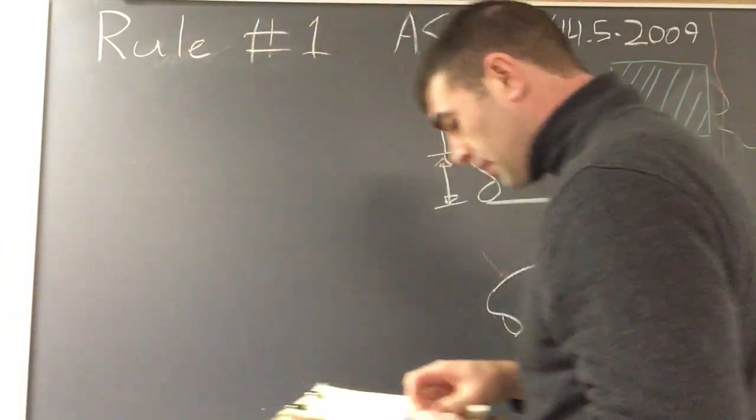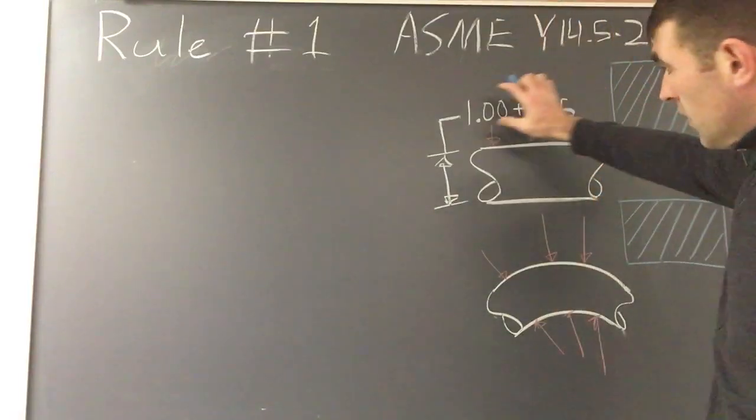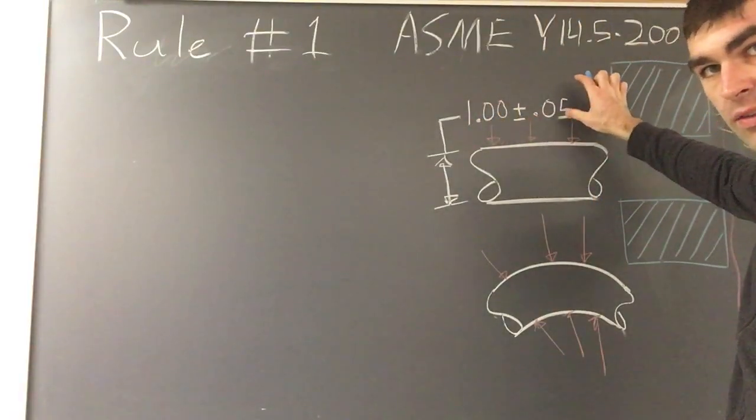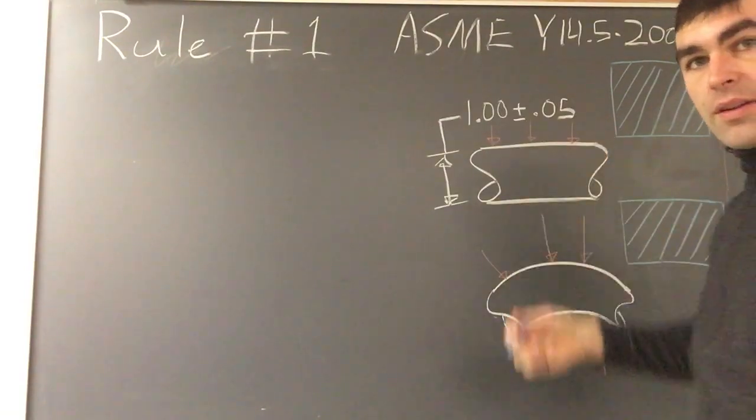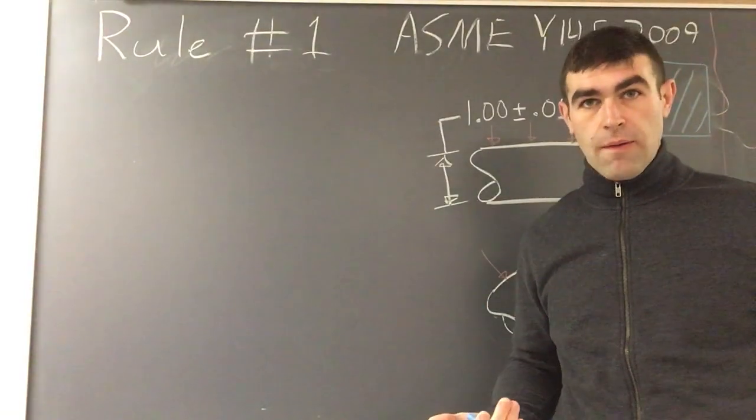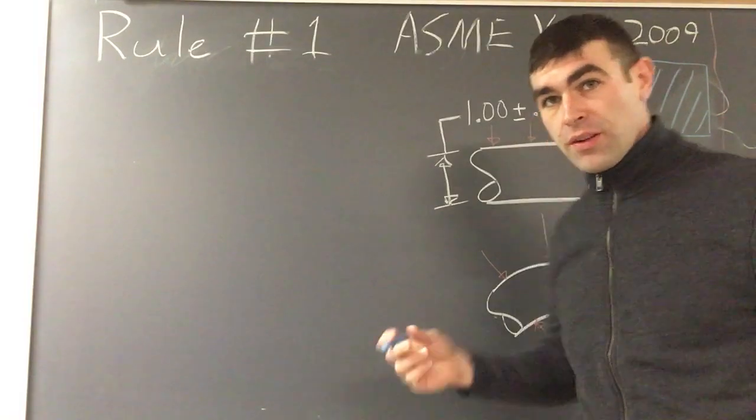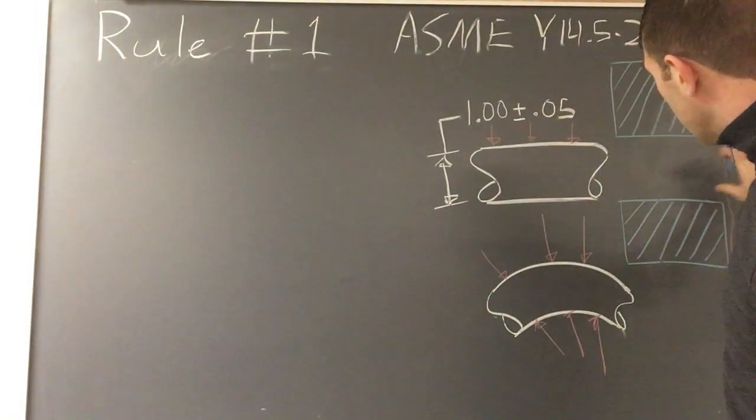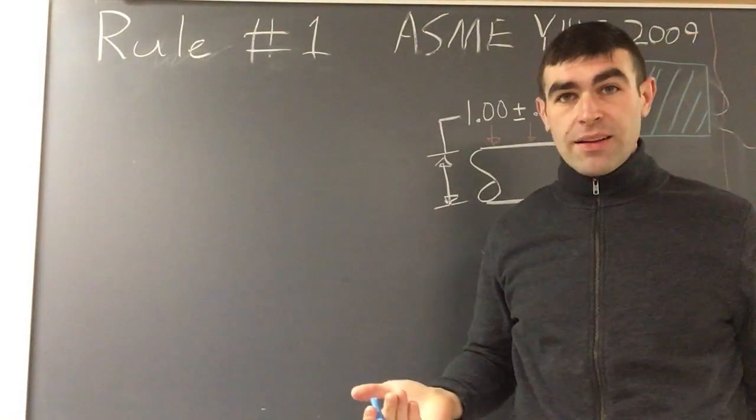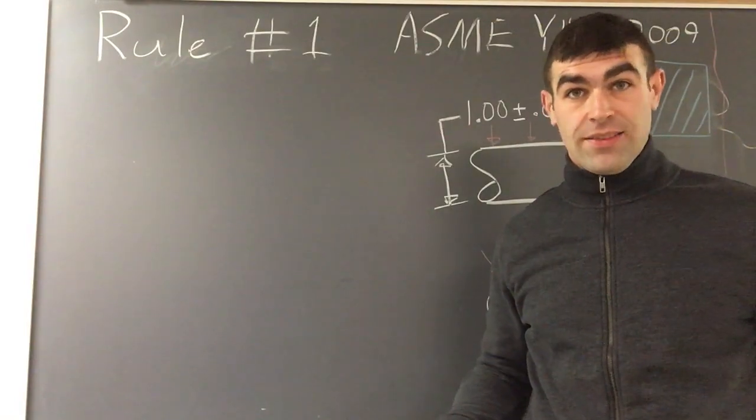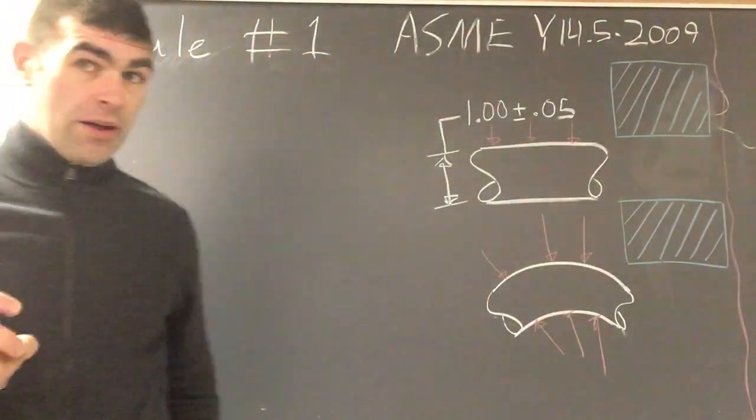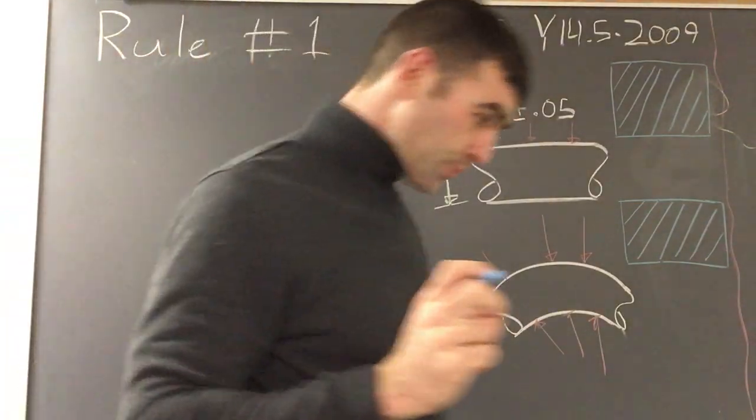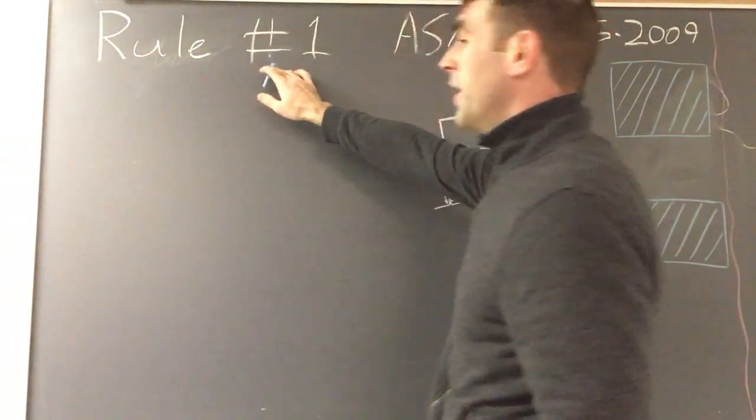We could say this part needs to be this size, and it needs to be a certain straightness. But how straight? You'd say straight enough to fit in this block. So how straight is that? That's as long as the block is. Luckily, there's a way around all this writing in rule number one.